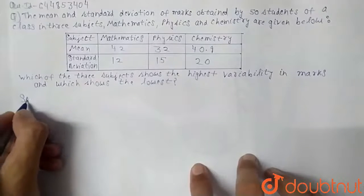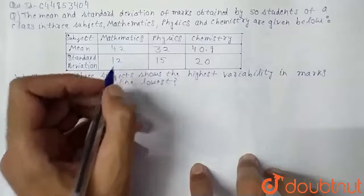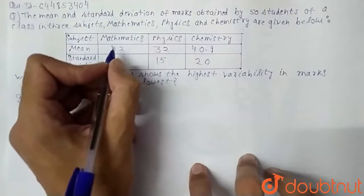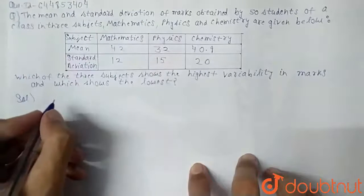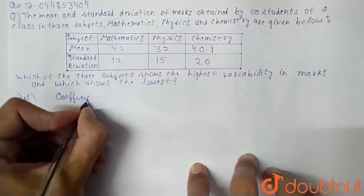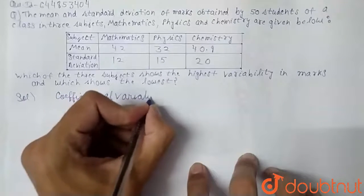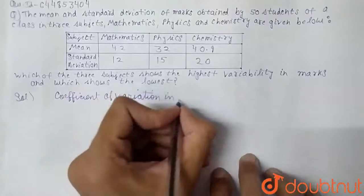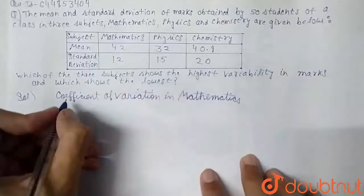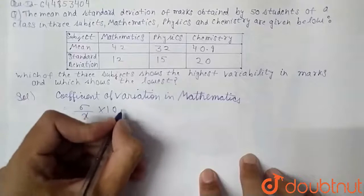For this, first we will find the variability of the three subjects one by one. We will find the coefficient of variation for mathematics. The formula for coefficient of variation, or variability, is: CV = (sigma / mean) × 100.